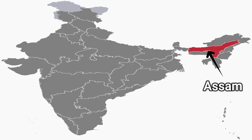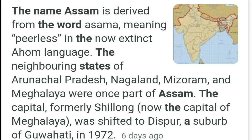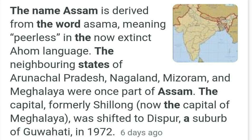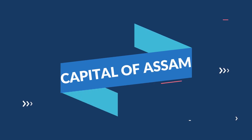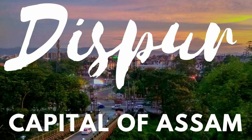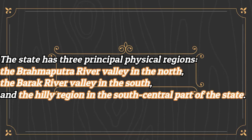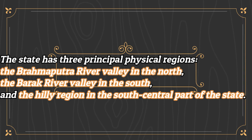Assam is a state in the northeastern part of the country. The name Assam is derived from the word 'Assama' meaning peerless in the now-extinct Ahom language. Assam is the biggest northeastern state. The neighboring states of Arunachal Pradesh, Nagaland, Mizoram and Meghalaya were once part of Assam. The capital of Assam is Dispur. The state has three principal physical regions: the Brahmaputra river valley in the north, the Barak river valley in the south, and the hilly region in the south-central part.